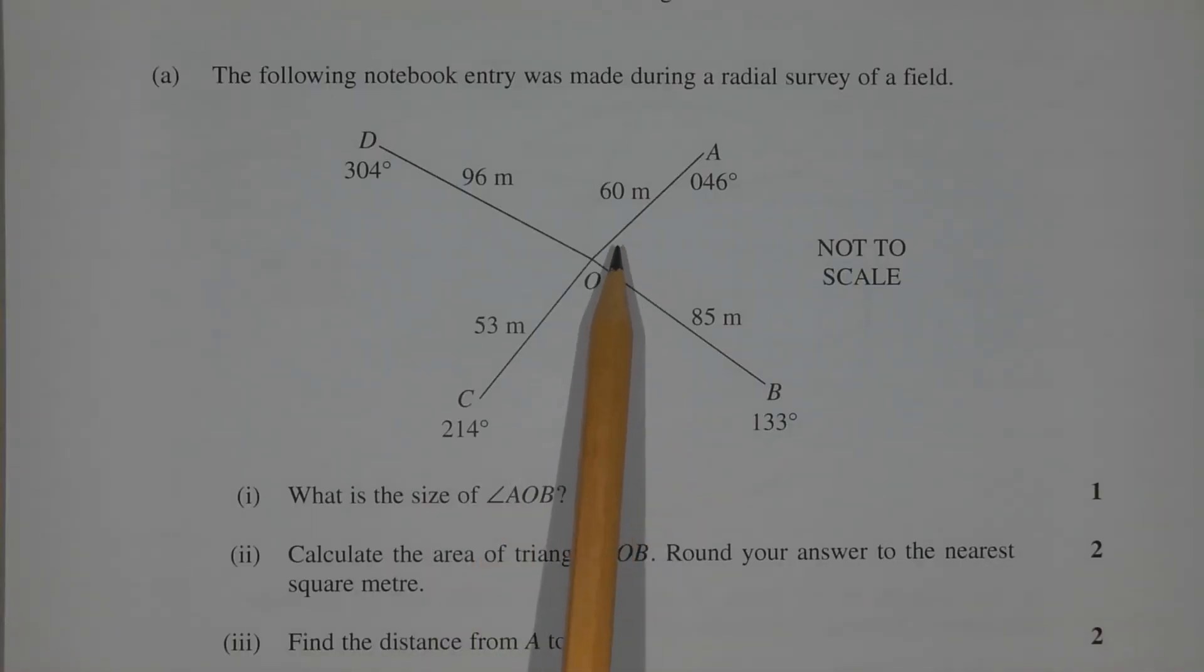Angle AOB is found by finding the difference between the bearing at point B and the bearing at point A. In other words, 133 degrees minus 46 degrees.